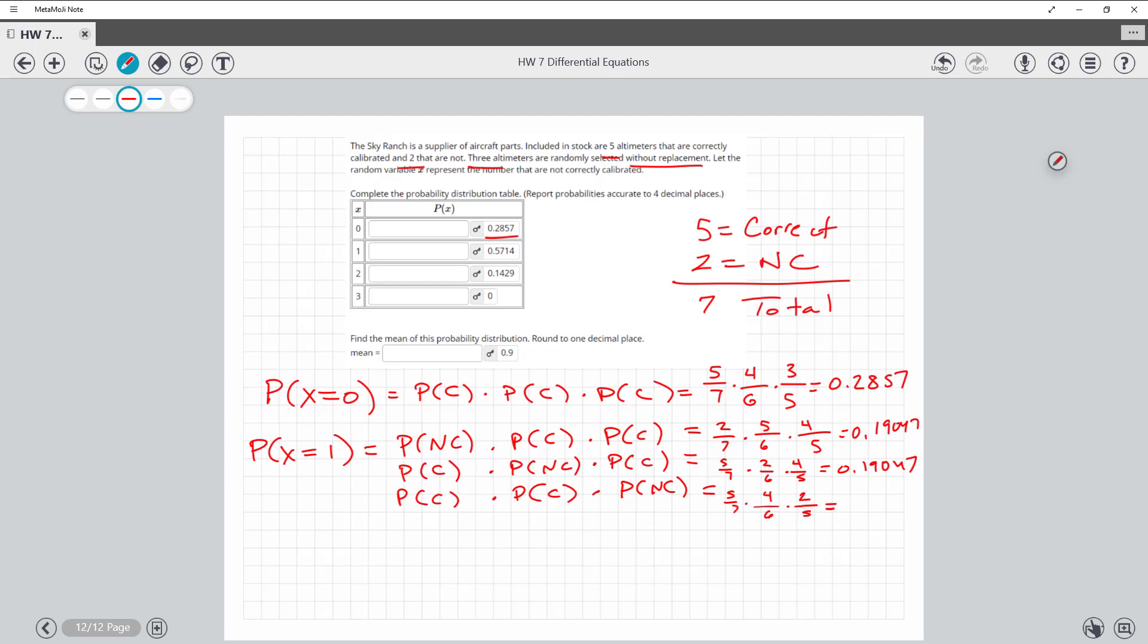And the reason why, if you think this is magic math, notice that the denominators, the seven times six times five, are the same, and the numerators, two, five, four, they're just in different order.